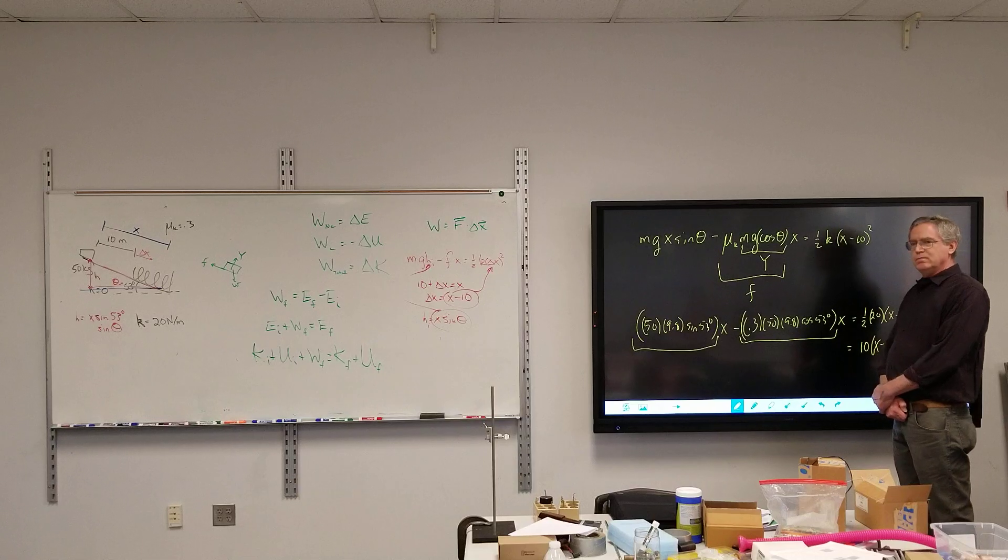All right. We have this x minus 10 squared. What is that squared? That means you multiply the term by a term and not just x squared minus 100. Thus, it's x squared minus 20x plus 100. Which is just 10x squared minus 200x plus 1,000.